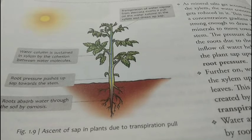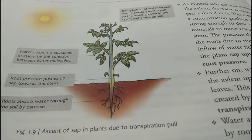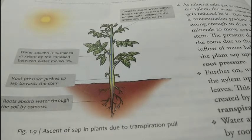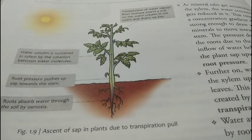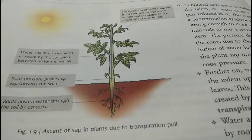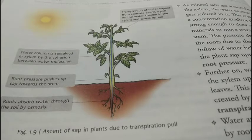As mineral salts get accumulated in the xylem, the water concentration gets reduced in it. This creates a concentration gradient strong enough to draw water and minerals towards the stem. The pressure developed in the roots due to continuous inflow of water helps in pushing the plant sap upwards — this is called root pressure.